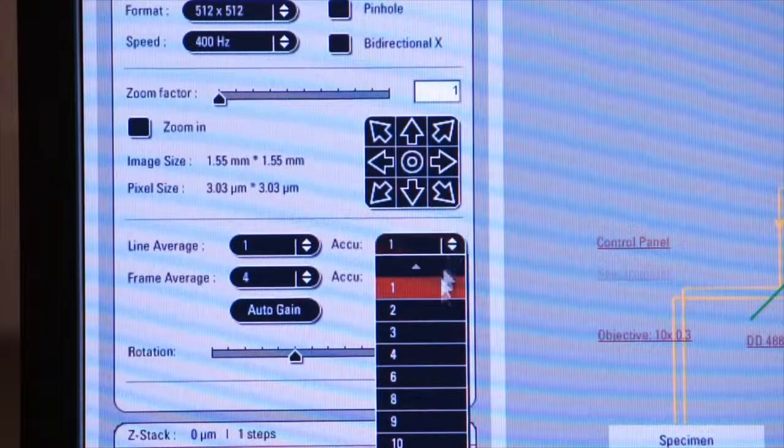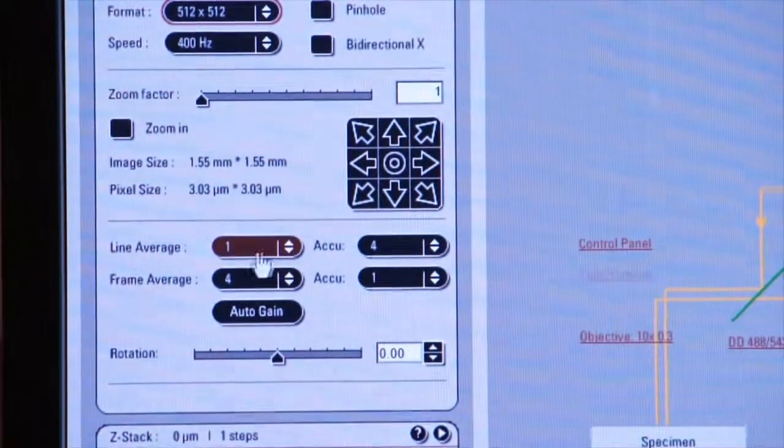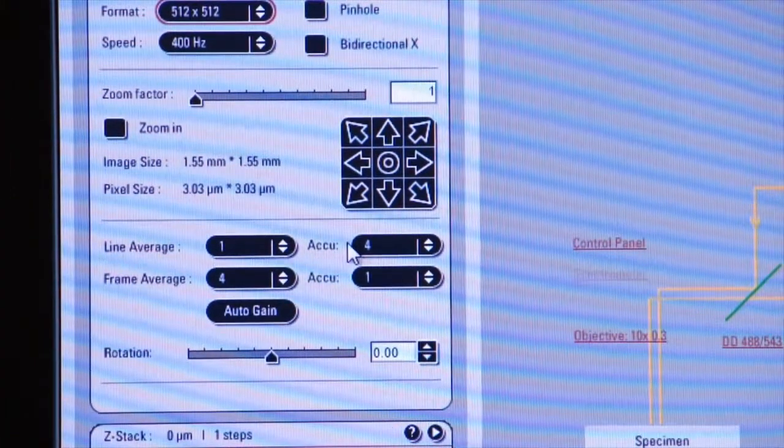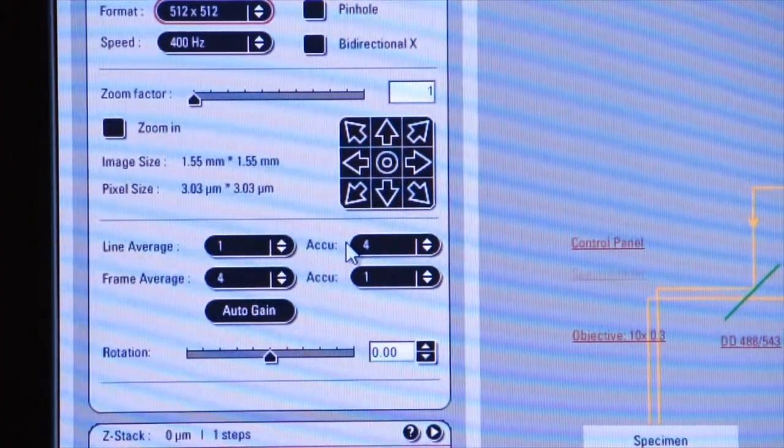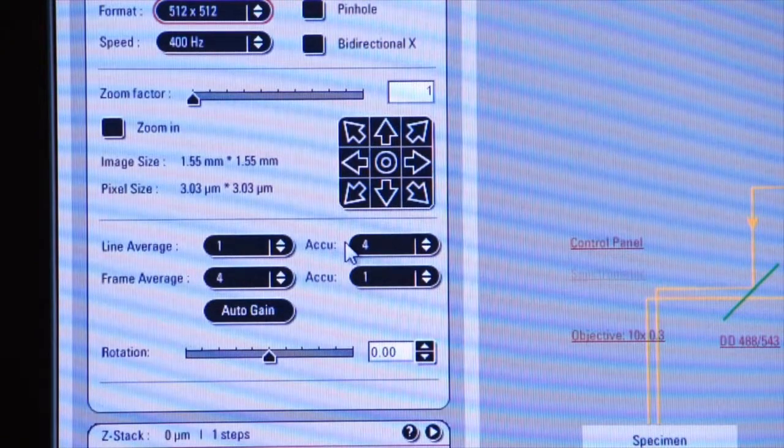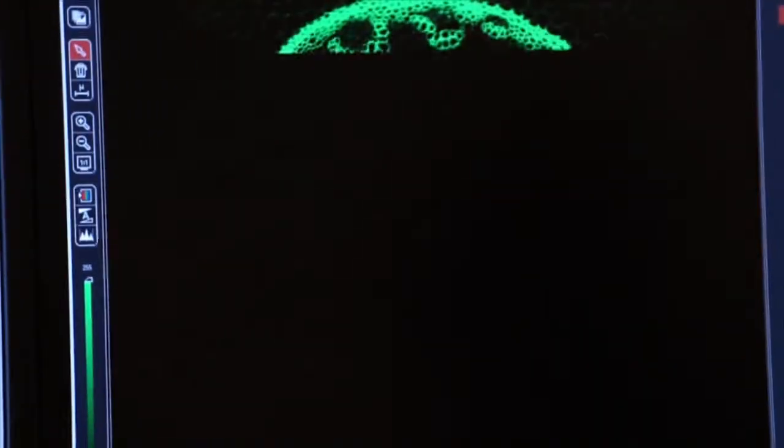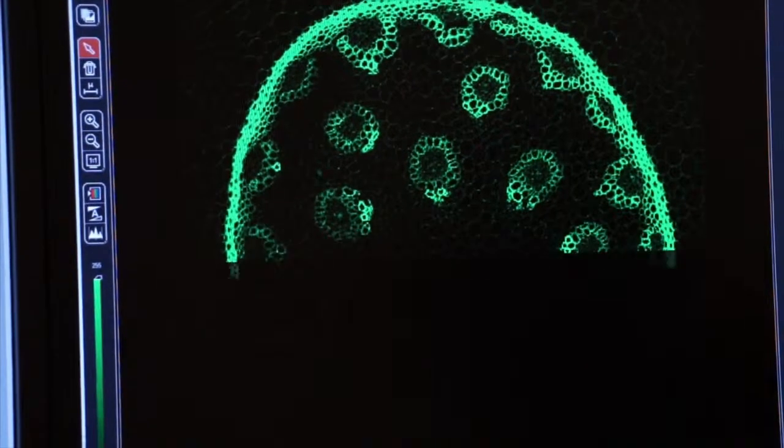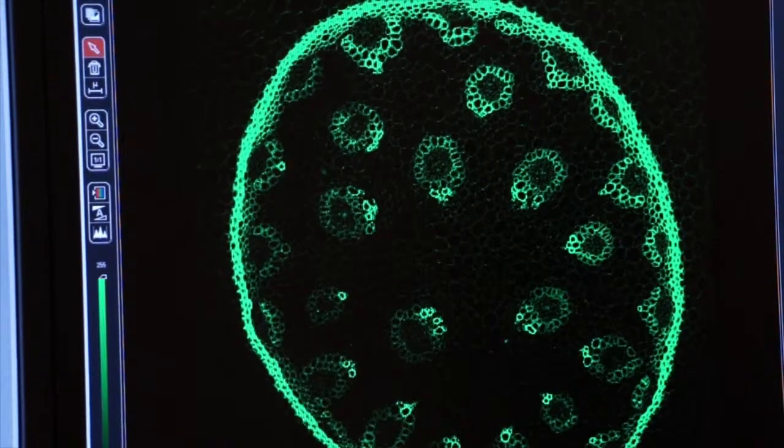So here I'll select four and now I've told the system to do four line scans per line and to accumulate or add together all of those values. Now if I click on capture image, you'll see my image brighten up significantly because it's accumulating each one of those scans together.